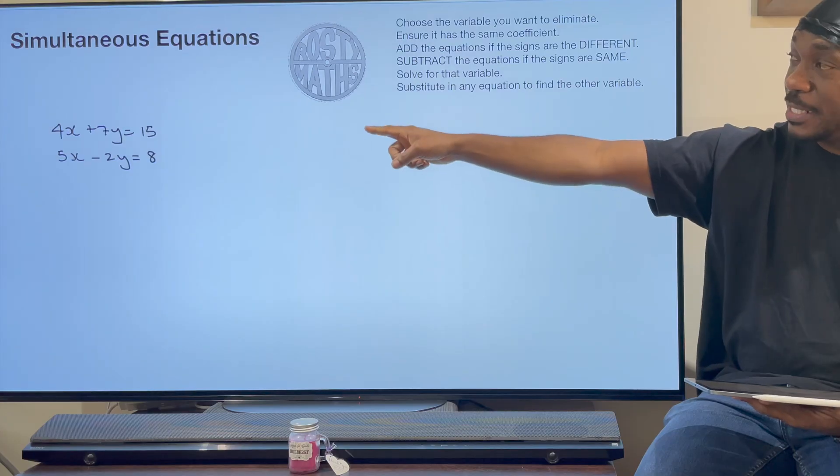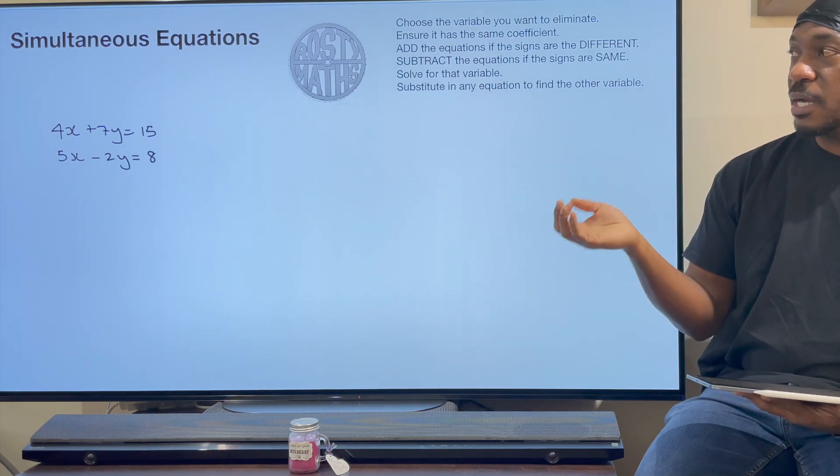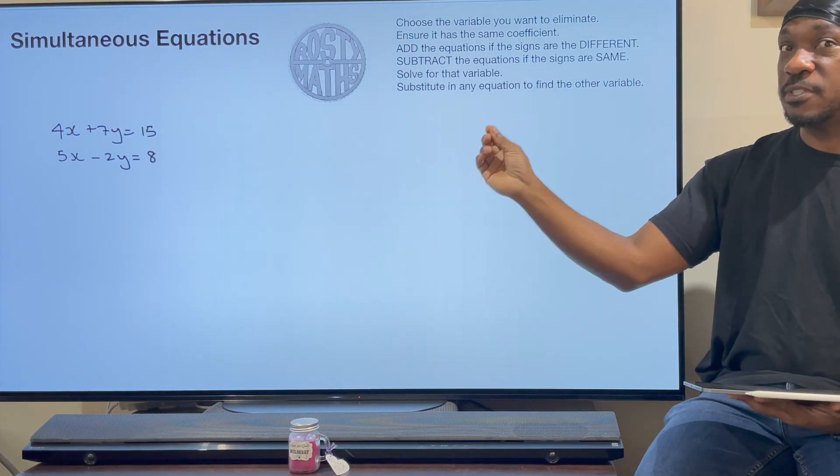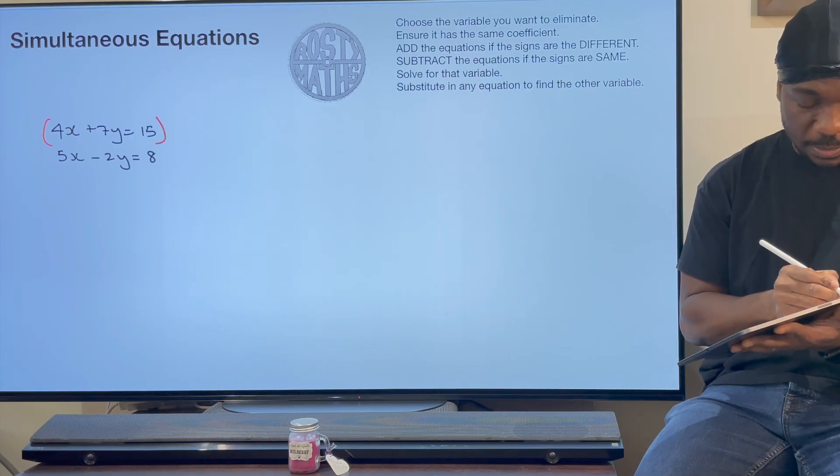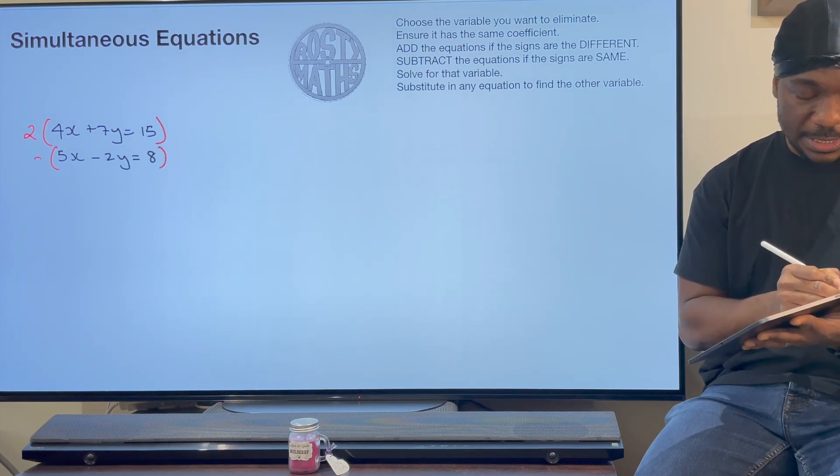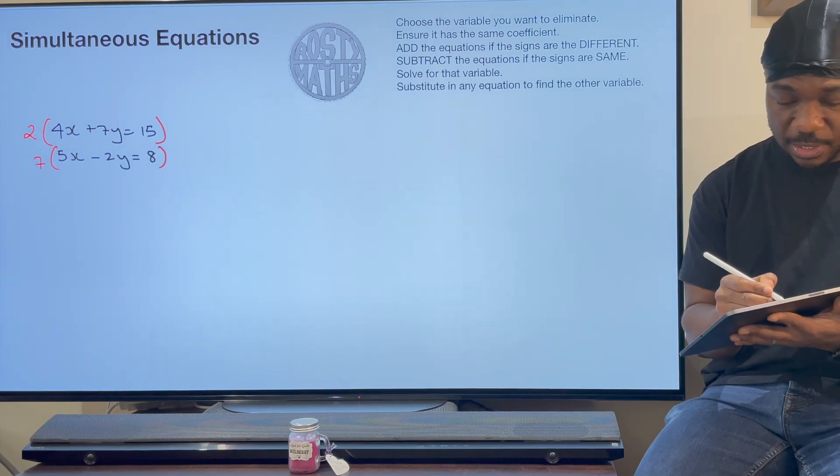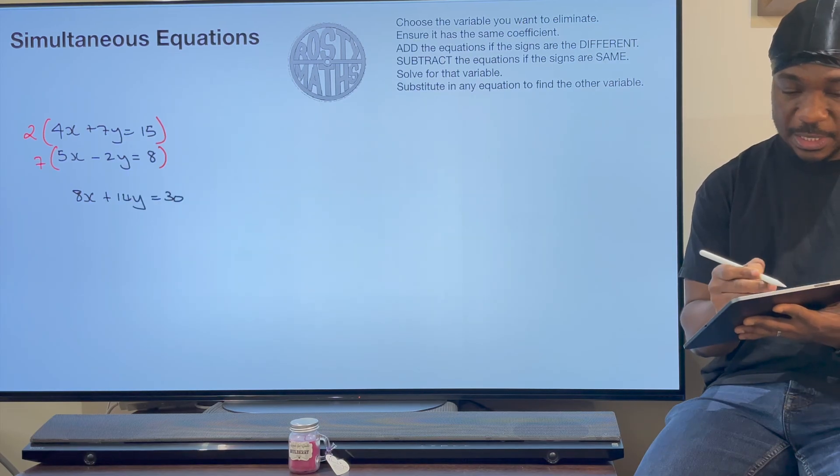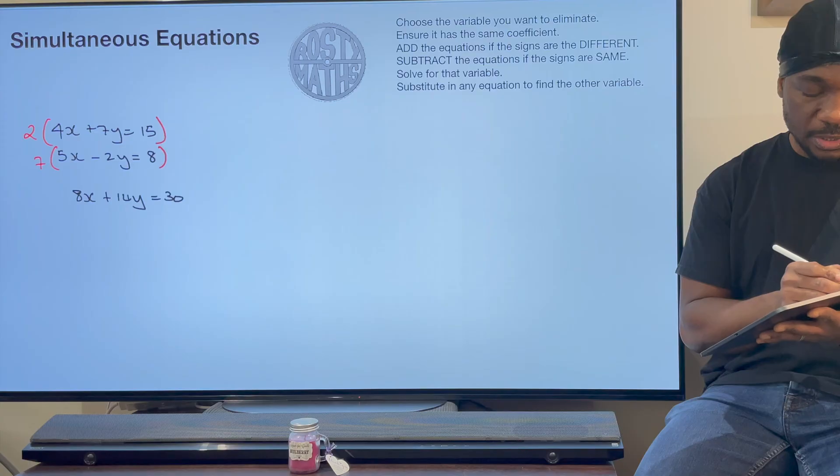Ensure that it has the same coefficient. Well, it doesn't because one's a 7 and the other one's a 2. So I need them both to be the same. The lowest common multiple between 7 and 2 is 14. So if I can get them both to be 14, I'm living my best life. I'm going to multiply this one by 2 in order to make this 7 into 14. Then I'm going to multiply this one by 7 in order to make this 2 into 14. Now I'm going to have 8x + 14y equals 30. That's because 2 times 4 is 8, 2 times 7 is 14, and 2 times 15 is 30.